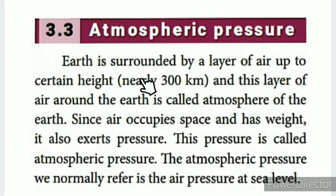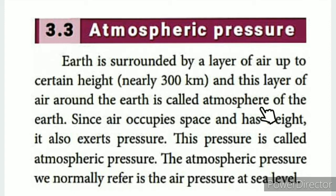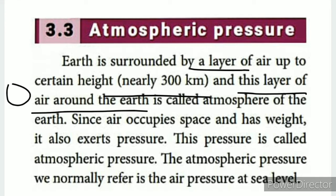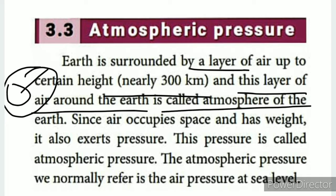Atmospheric pressure: the earth is surrounded by a layer of air up to a certain height — nearly 300 km. This layer of air around the earth is called the atmosphere. The air in this atmosphere has weight, and that weight exerts pressure — this is atmospheric pressure.